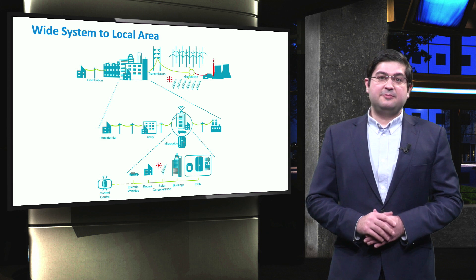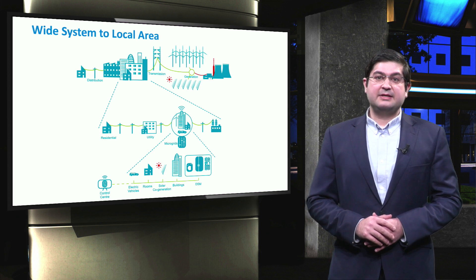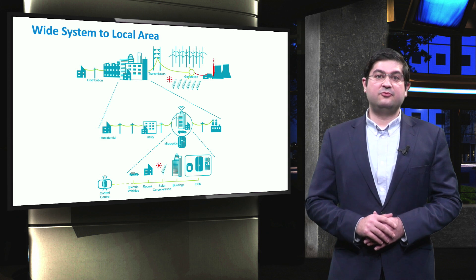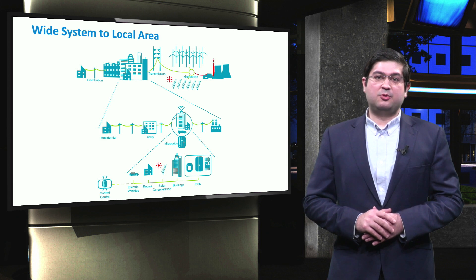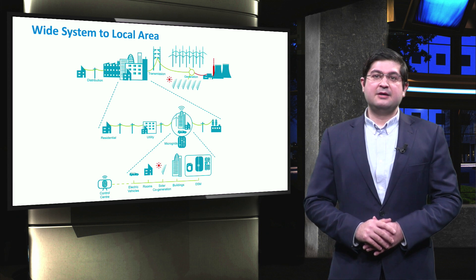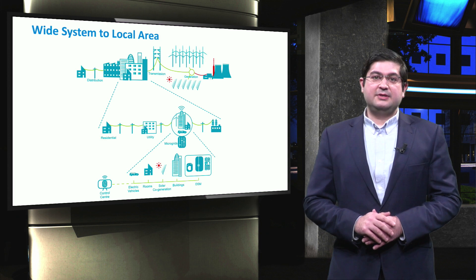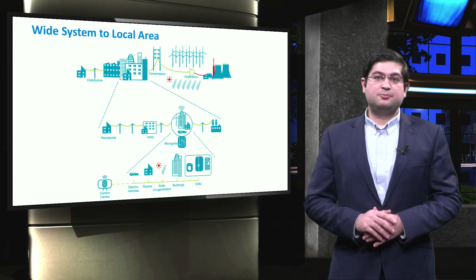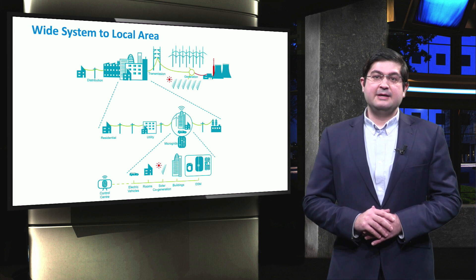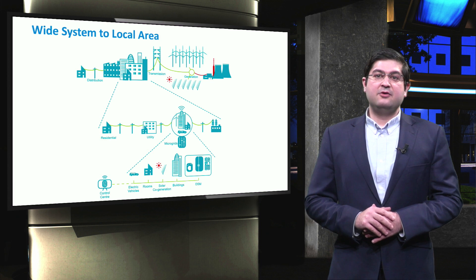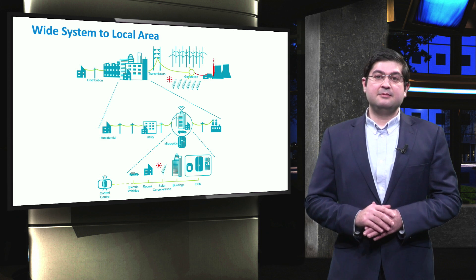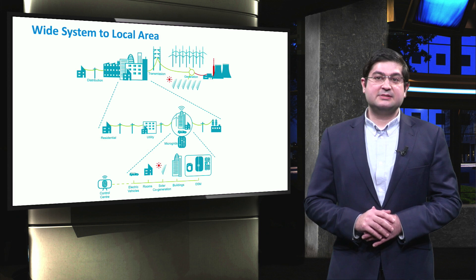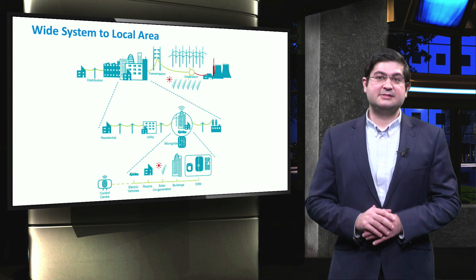The first determinant factor is the extent of the area for which an electricity service is provided. For instance, when one unit starts to provide frequency support, the impact of this support is reflected throughout the whole grid, because frequency is seen as a global signal.